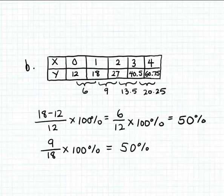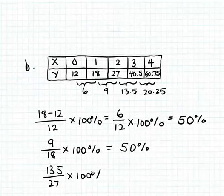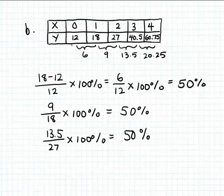Let's calculate the third percent change, from 27 to 40.5. That's 40.5 minus 27, which is 13.5, divided by 27, times 100%. That again turns out to be 50%. We're noticing a steady percent change in the outputs. If the last percent change is also 50%, then the function in part b is indeed an exponential function.